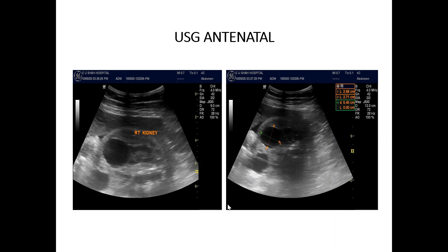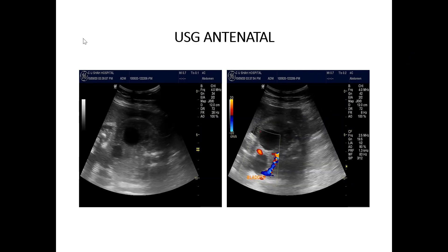Antenatal ultrasound showed a well-defined anechoic cystic lesion measuring approximately 27 x 26 mm noted adjacent to the right kidney. Umbilical vessels pass adjacent to the bladder, so the lesion is seen separate from the bladder and other major abdominal organs.